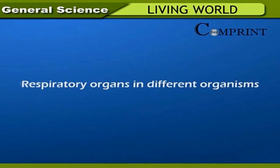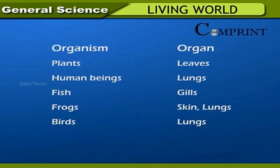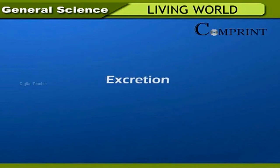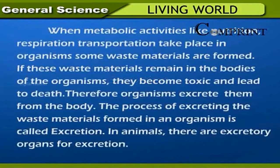Respiratory organs differ across organisms: in plants, the respiratory organ is the leaf; in human beings, it is the lungs; in fish, it is the gills; in frogs, it is the skin and lungs; and in birds, it is the lungs. Excretion: when metabolic activities like nutrition, respiration, and transportation take place in organisms, some waste materials are formed.